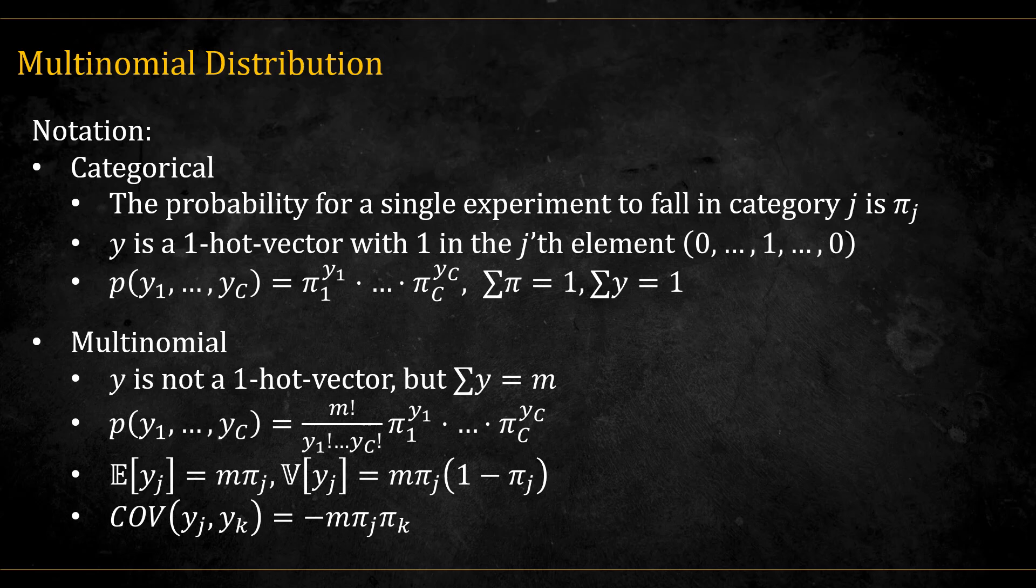For multinomial, the situation is rather similar. Y is a vector, but not a one-hot vector. The sum of the y's is equal to m. The probability is given by this formula. And here are also the mean, variance, and covariance. Note that the index here is for the class, not for the observation.